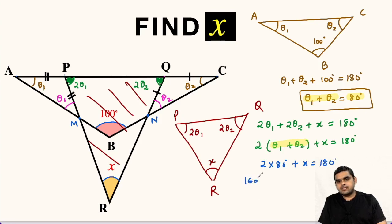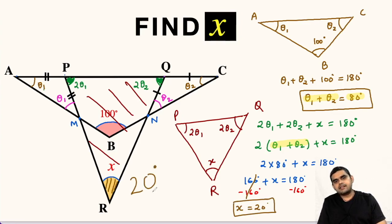So 160 degrees plus x equals 180 degrees. Let us subtract 160 degrees from both sides. So this will get cancelled and we will be left with x equals 20 degrees. So the value of this unknown angle x will be 20 degrees.